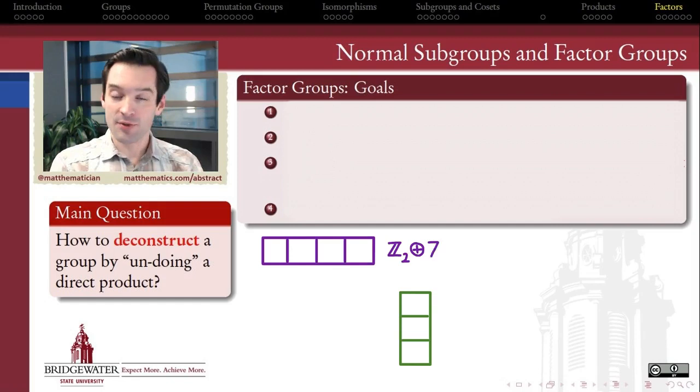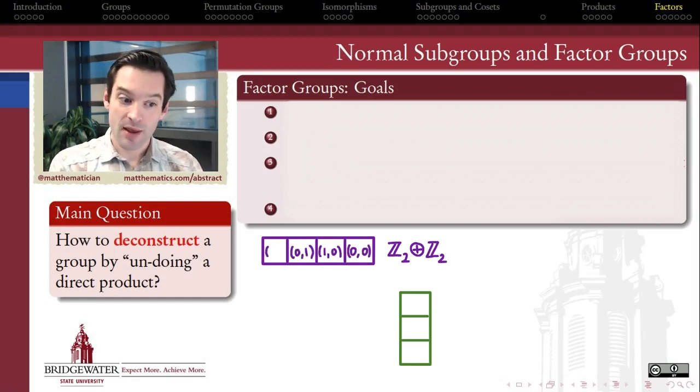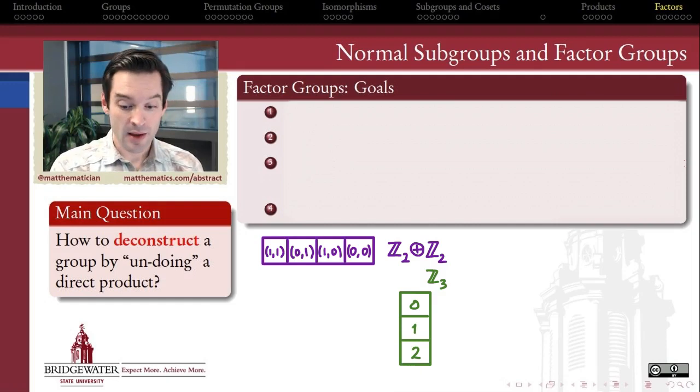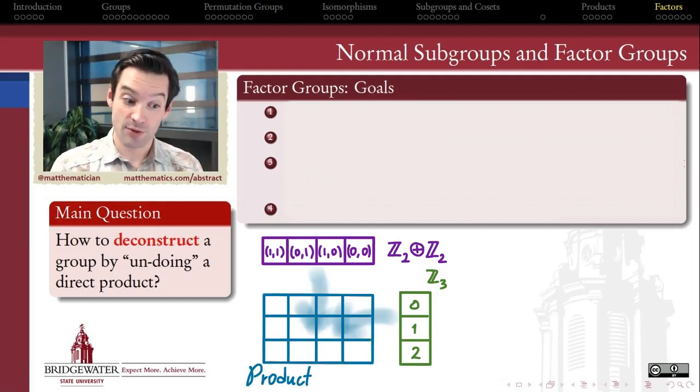In what ways is the larger group built out of smaller constituent subgroups on the inside of it? So whereas last week we talked about products as a way of taking two groups that might be relatively easily understood, like the Klein 4 group and the Zmod 3, the group of order 3, and taking those groups and piecing them together to form a larger group in a product construction.